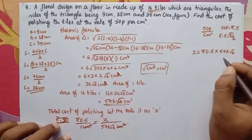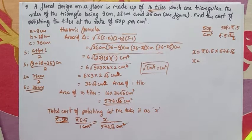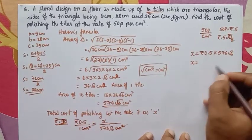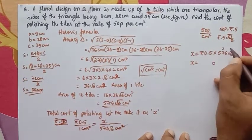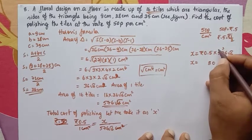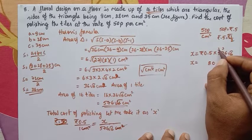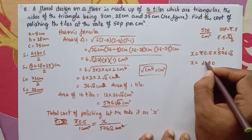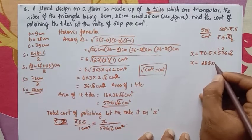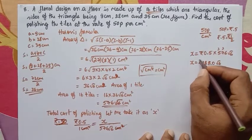Calculating 0.5 × 576: 576 × 5 = 2880, and placing the decimal one digit from the right gives 288. So x = 288√6 rupees.